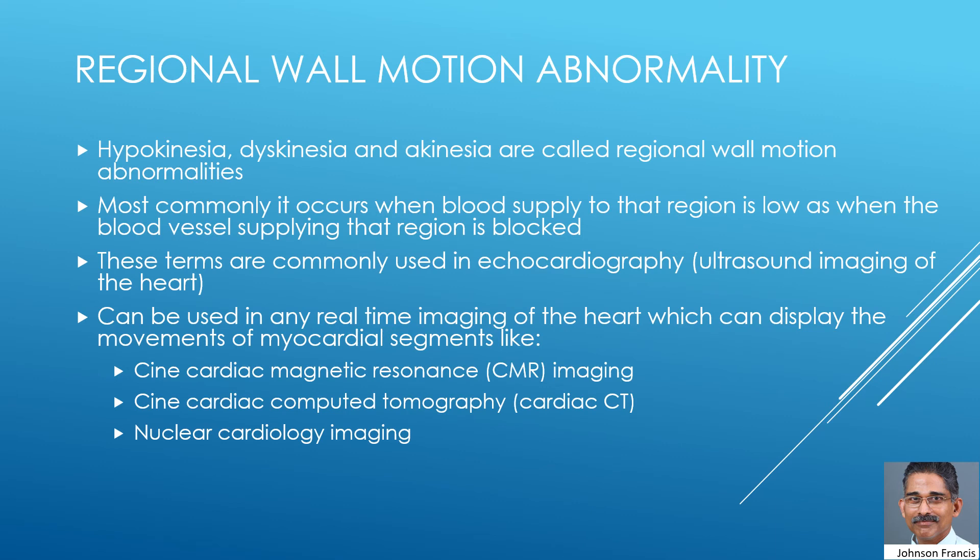Hypokinesia, dyskinesia, and akinesia are called regional wall motion abnormalities. Most commonly, this occurs when blood supply to that region is low, as when the blood vessel supplying that region is blocked.